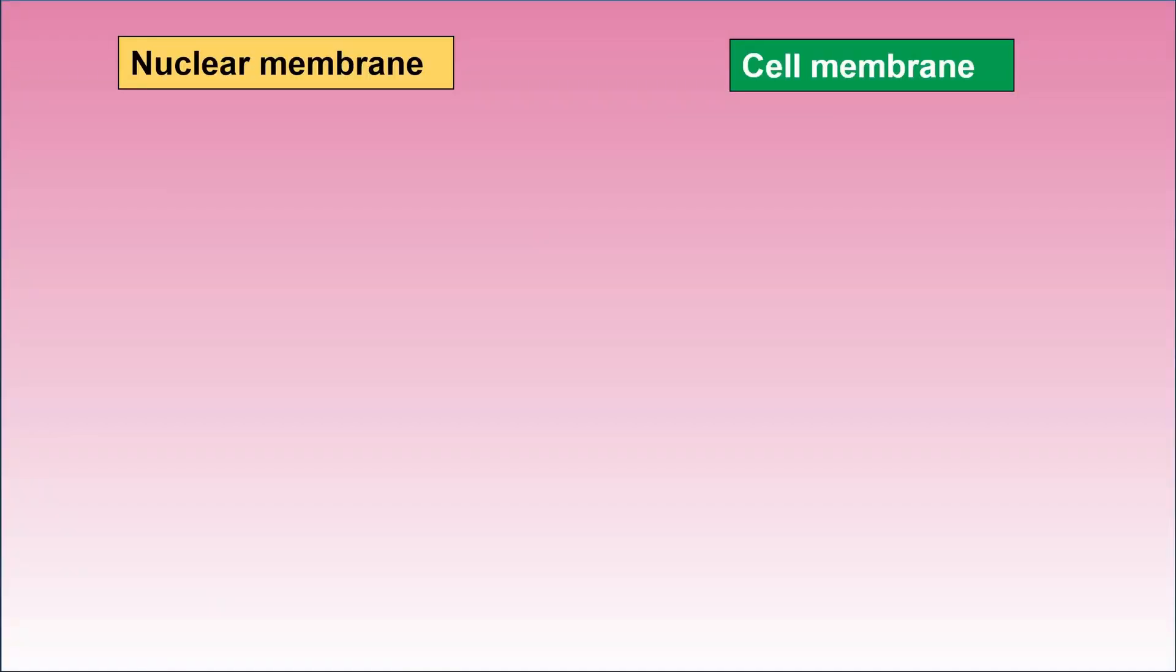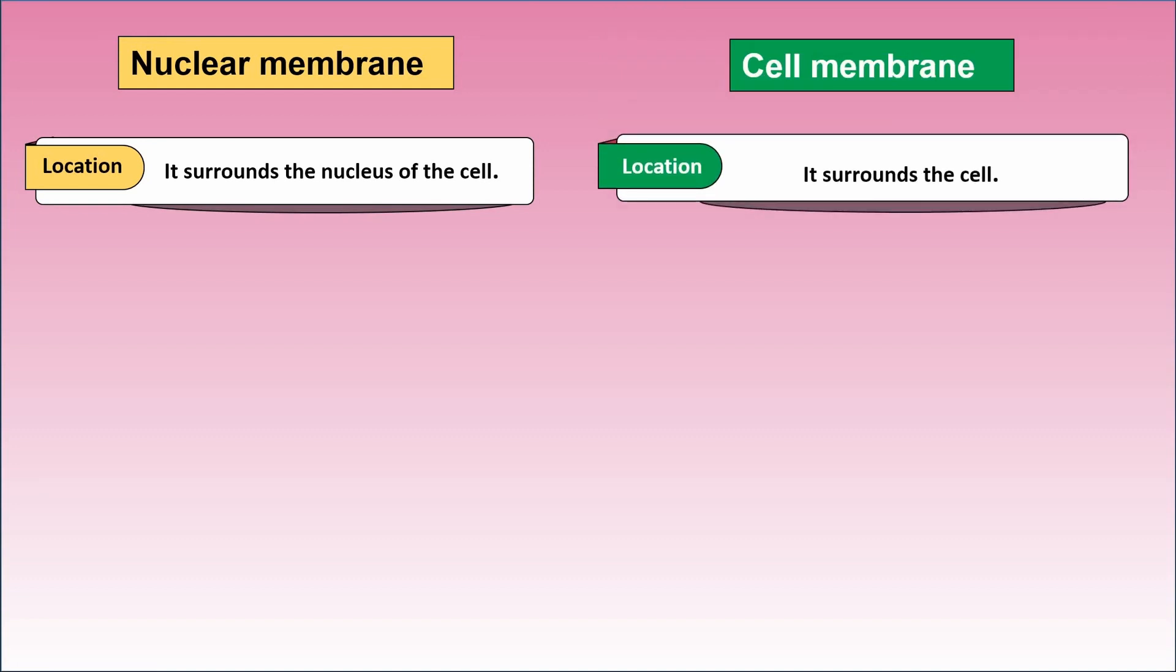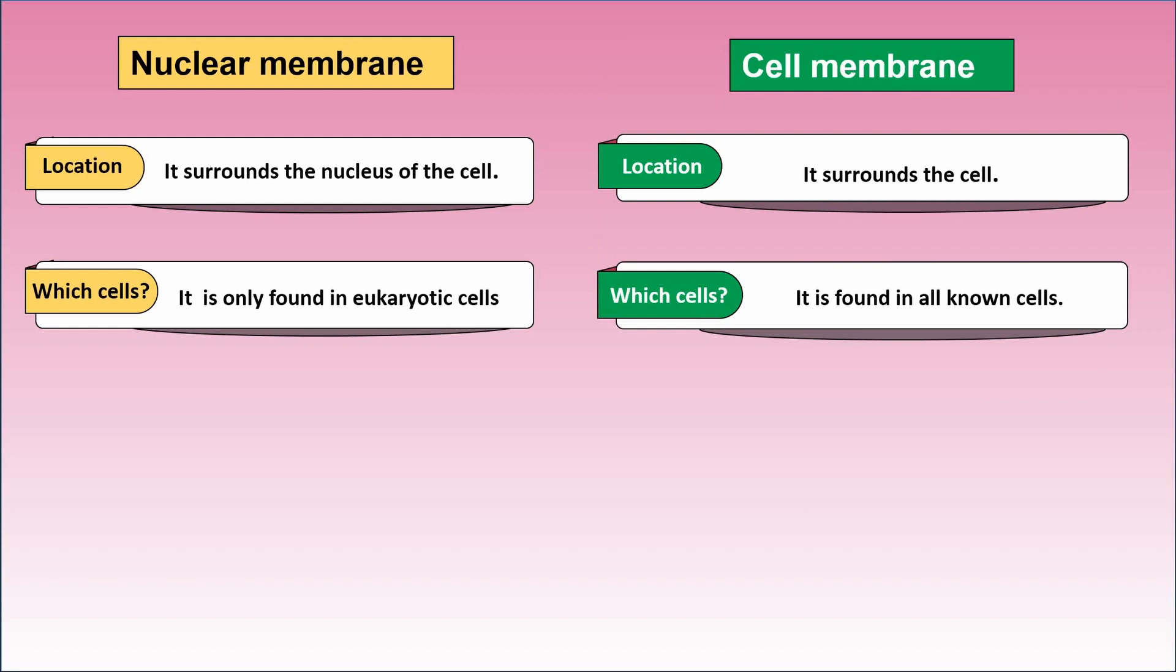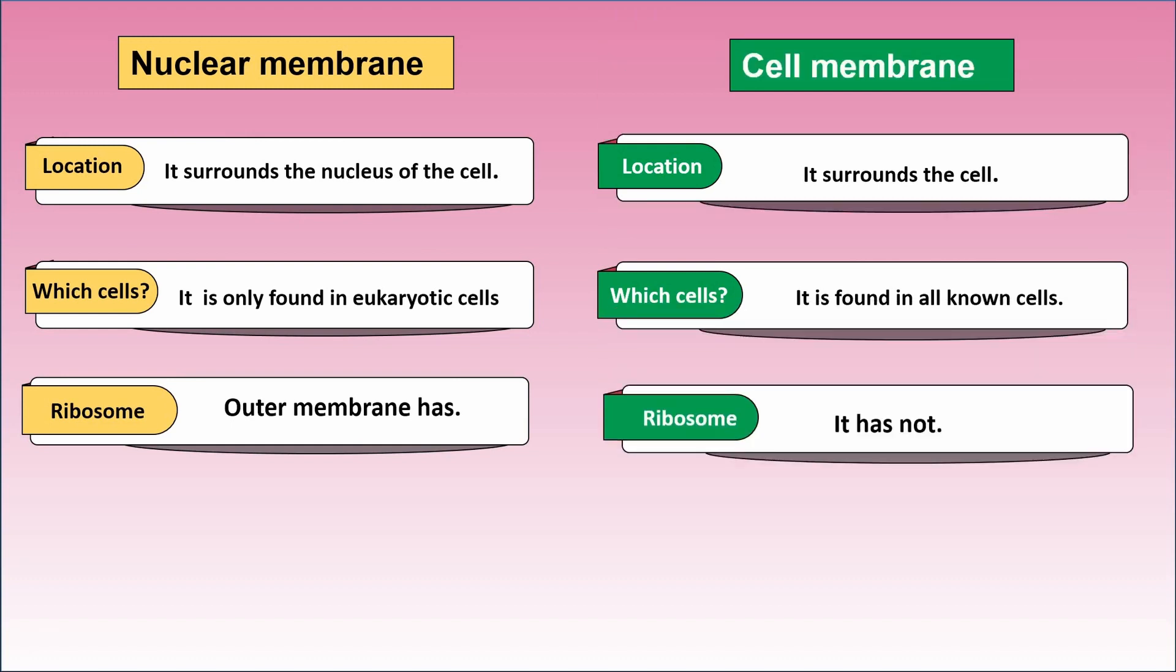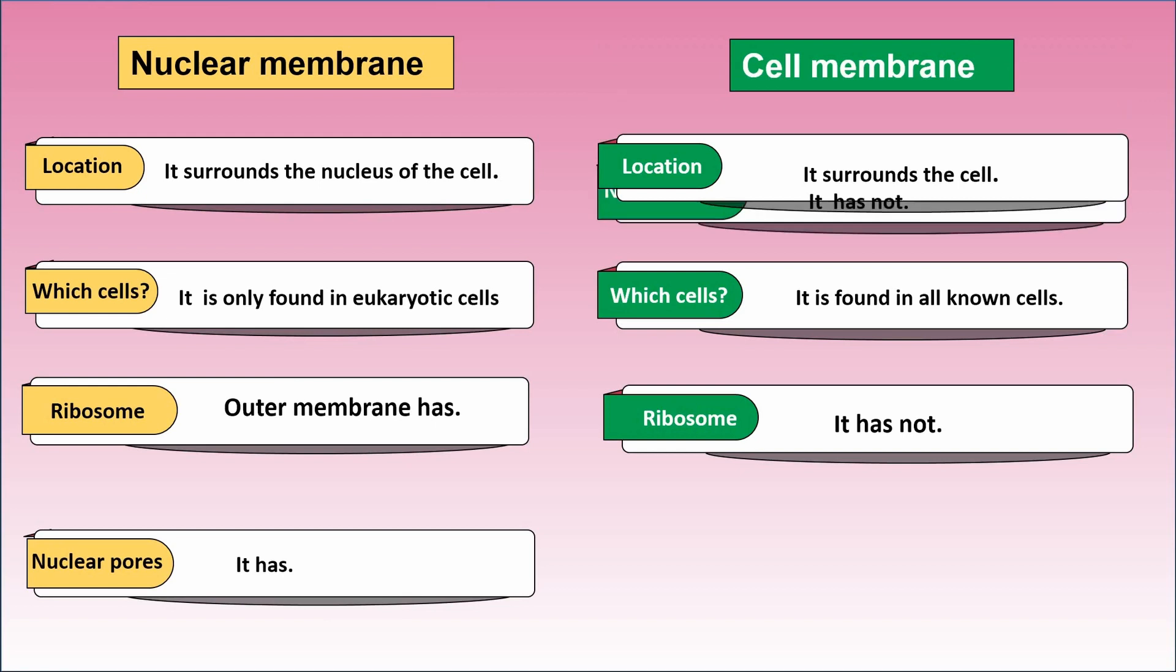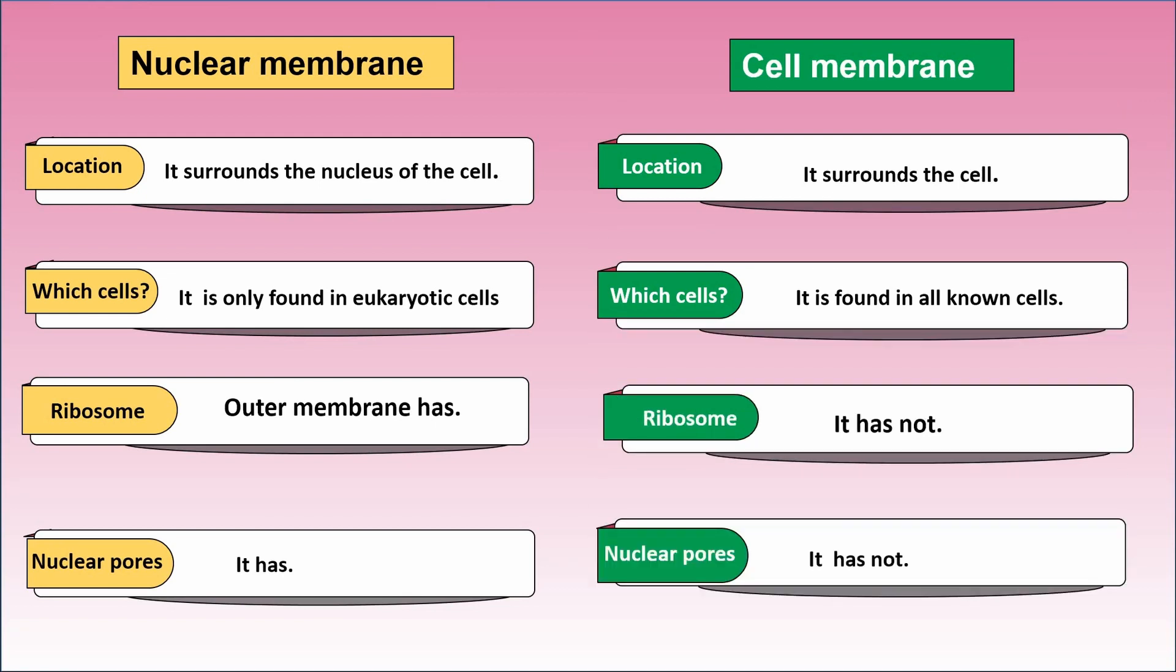Now I want to compare nuclear membrane with cell membrane. Nuclear membrane surrounds the nucleus of the cell, but cell membrane surrounds the cell. Nuclear membrane is only found in eukaryotic cells, but cell membrane is found in all known cells. Outer membrane of nuclear membrane has a ribosome, but cell membrane has not ribosome. Nuclear membrane has nuclear pores, but cell membrane has not nuclear pores.